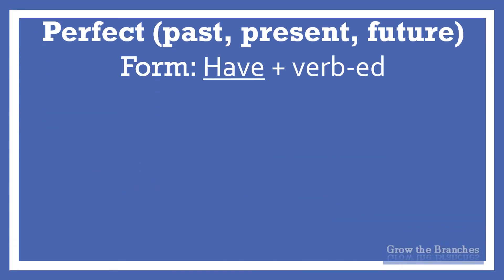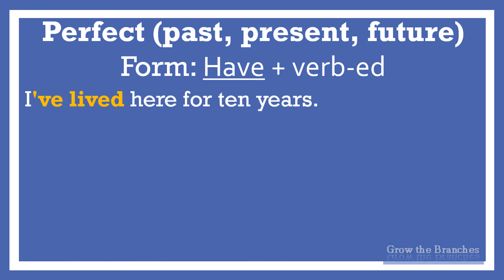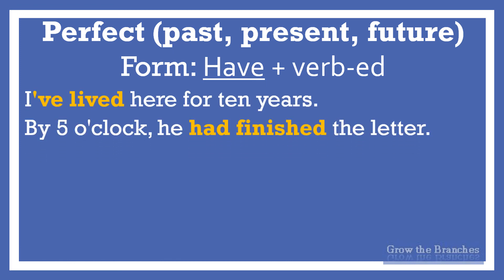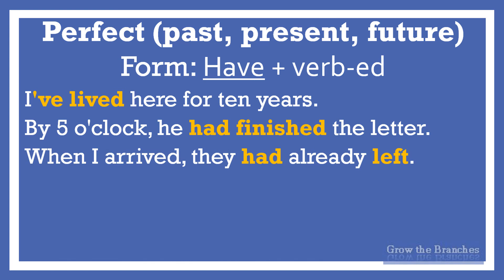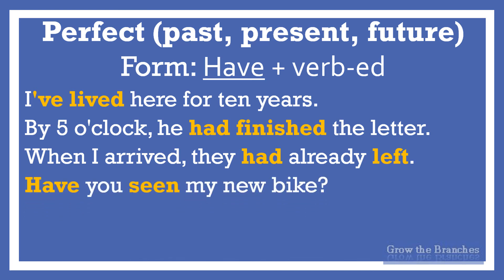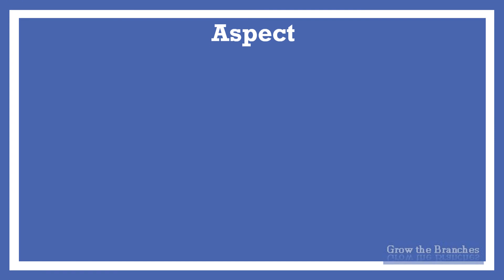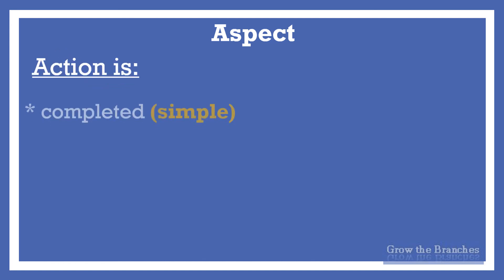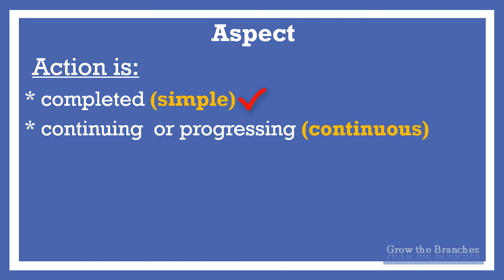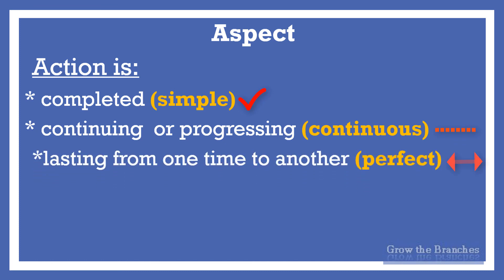Examples of the perfect aspect: 'I've lived here for 10 years' — from 10 years ago until now. 'By 5 o'clock he had finished the letter' — he had started writing at some time before 5 o'clock and finished at 5 o'clock. 'When I arrived, they had already left' — they left at some time before I arrived; it links two times. 'Have you seen my new bike?' — at any time before up to now. 'I will have done the ironing by the time you get home' — relates time between now and when you get home in the future. Use the simple for completed and timeless actions, the continuous for progression at some point in time, and the perfect when action starts at one point and finishes in another.